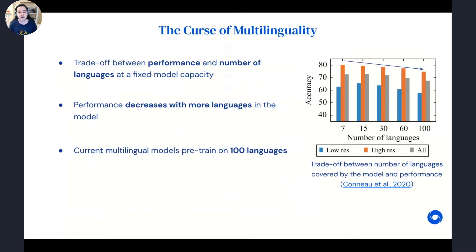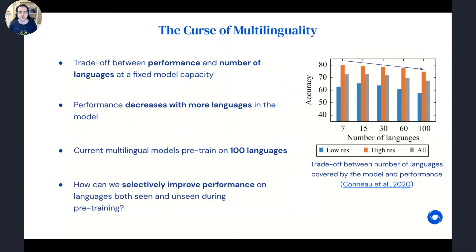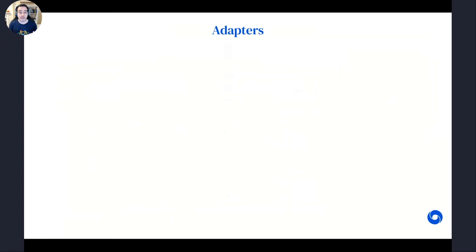State-of-the-art methods try to strike a balance by covering about 100 languages in the pre-training data, so these models can serve as reasonable baselines for a large number of languages, but cannot really excel in any particular one. The main research question is how we can improve performance on languages we particularly care about — whether they were already encountered during pre-training or are completely unseen languages with much fewer data.